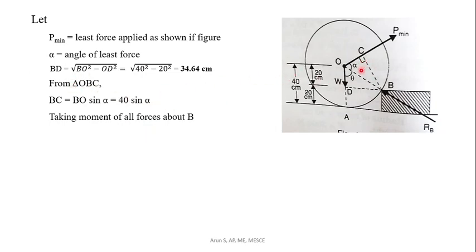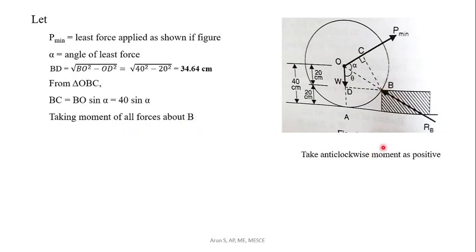What is BC? From the triangle, BC equals OB sin alpha, that is 40 sin alpha. That is the BC length in terms of the radius and angle alpha. Taking moments of all forces about point B, with anticlockwise moment taken as positive, P minimum acts with moment arm BC equal to 40 sin alpha.